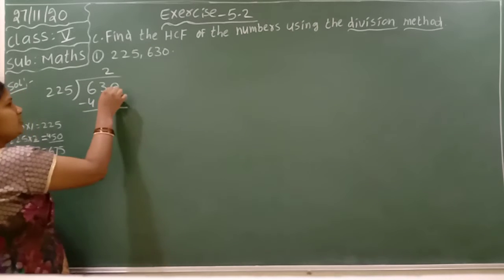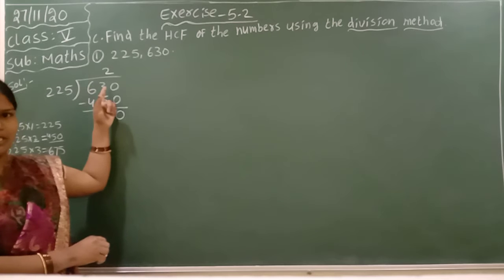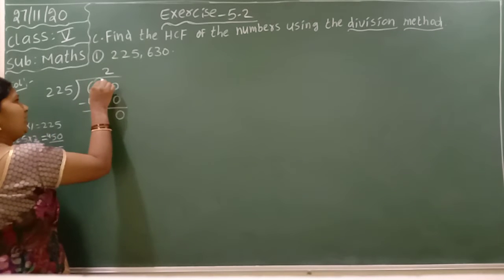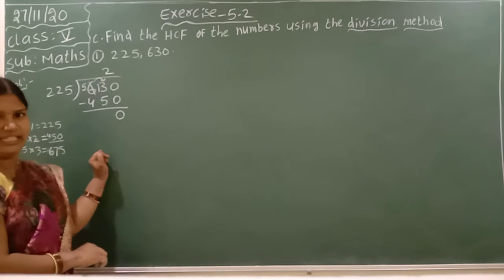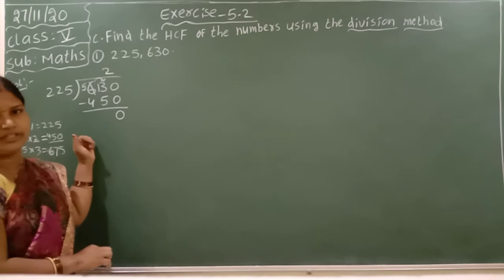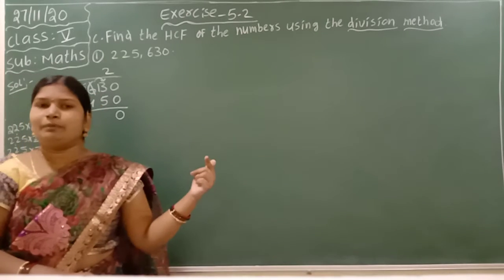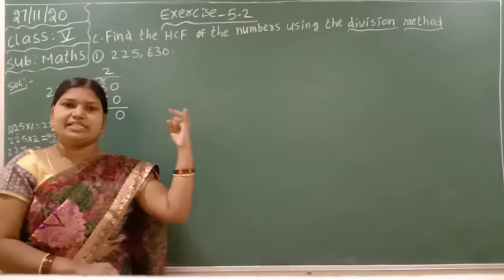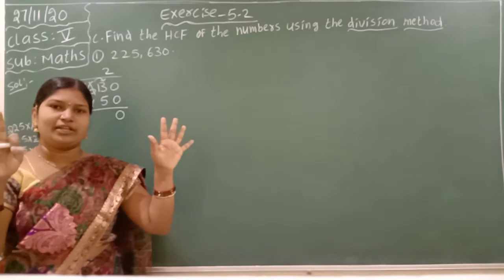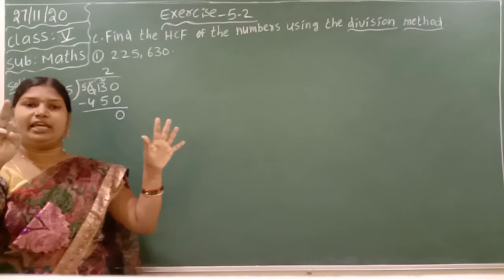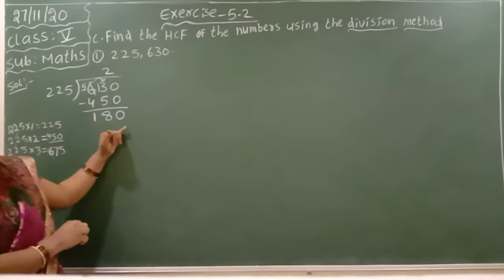So you have to take 225 times 2 which is 450, minus. Do the subtraction: 0 minus 0 is 0. 3 minus 5 is not possible, it's a smaller number. Take borrow and regroup it. This becomes 5, this becomes 13. 13 minus 5 - count from 5 to 13 - that's 8. 5 minus 4 is 1. The answer is 180.